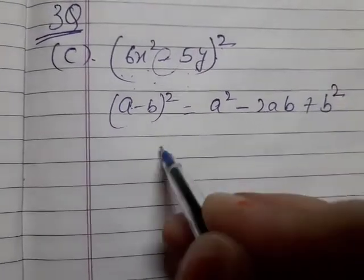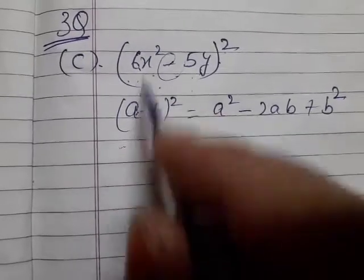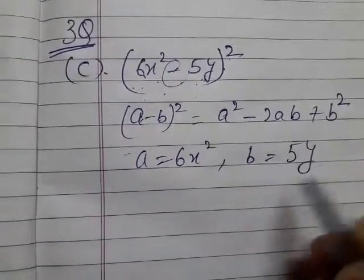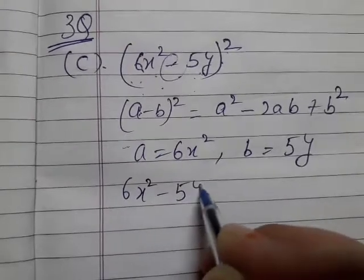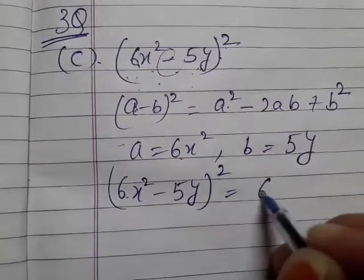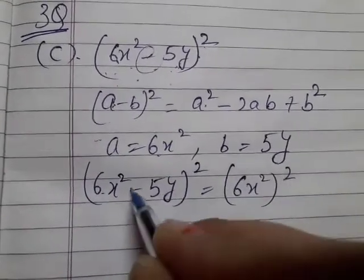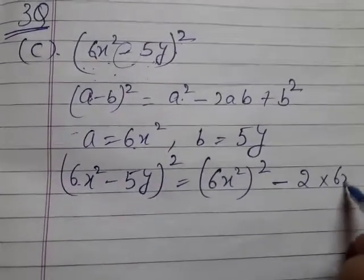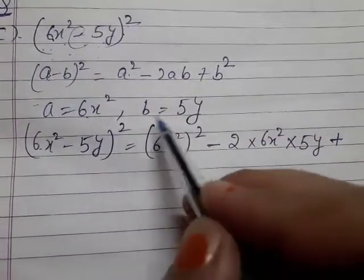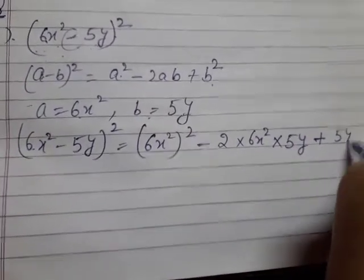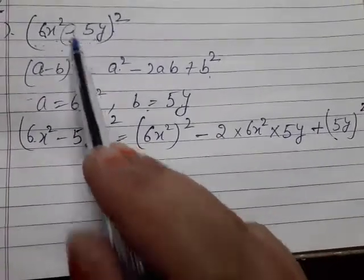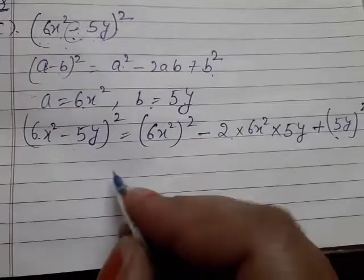Comparing, a is 6x² and b is 5y. So (6x² - 5y)² becomes a² which is (6x²)², minus 2 times a times b, plus b². Here b is 5y — we take minus 5y because the minus sign is in the middle, which is why we applied the (a-b)² formula.